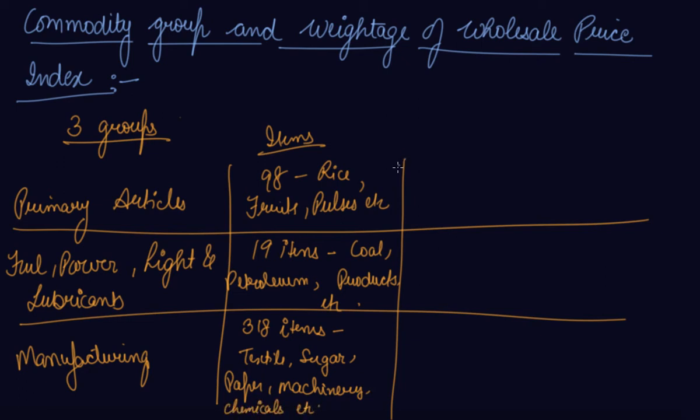These are the items included in these three major categories. We have given weightages to these three categories: 22.02, 14.23, and 63.75 respectively.